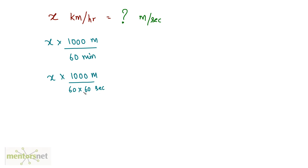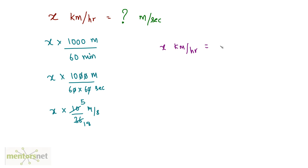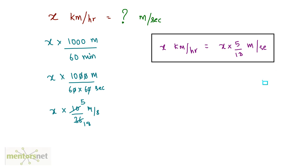Since one minute is 60 seconds, 60 minutes equals 3600 seconds. The zeros cancel out, giving us x times 10 divided by 36, which simplifies to x times 5/18 meters per second. So x kilometers per hour equals x times 5/18 meters per second. This is an important conversion to remember.